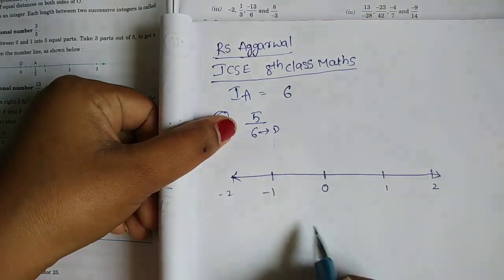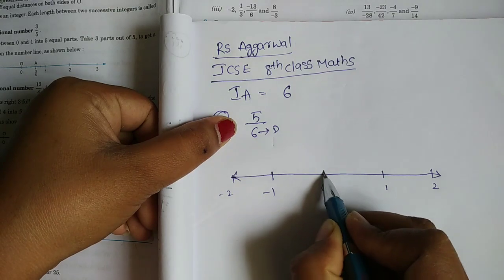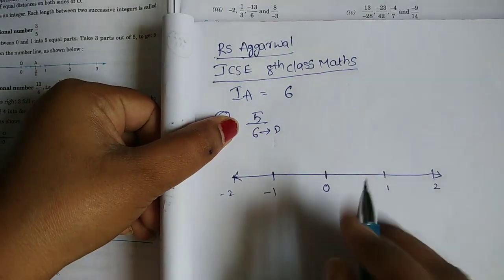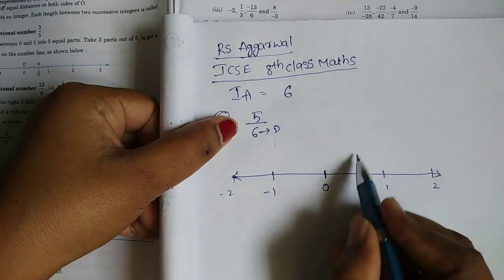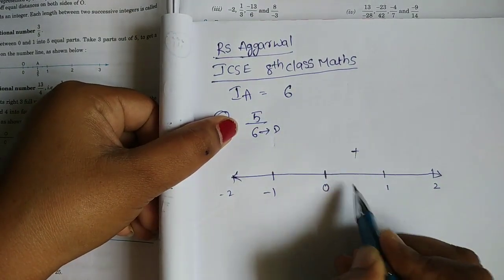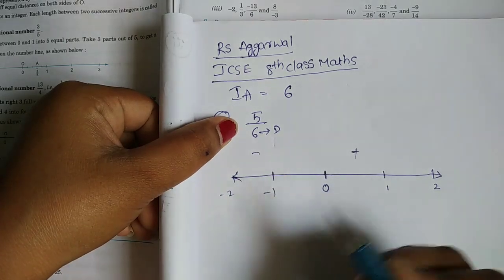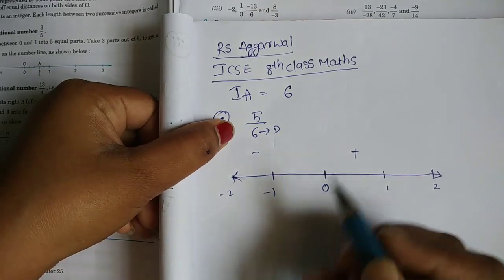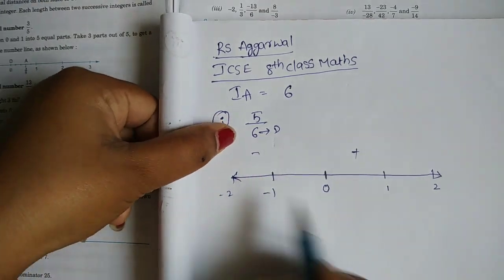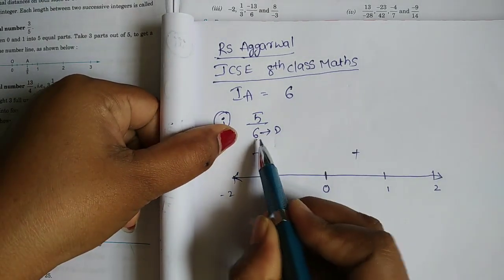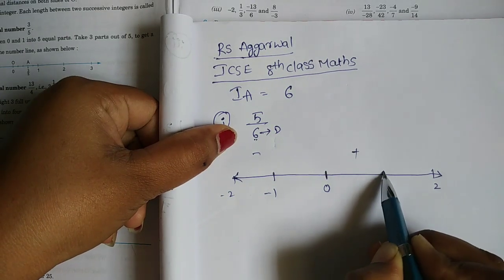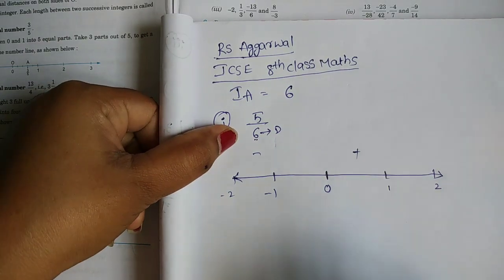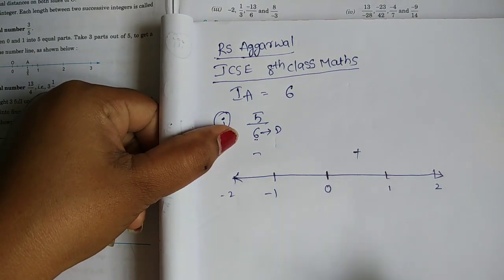Denominator 6 means we divide the segment from 0 to 1 into a total of 6 equal parts. Since 5 by 6 is a positive number, we work on the positive side of the number line. This is the positive side; this is the negative side.